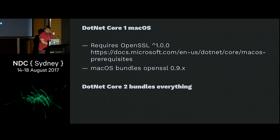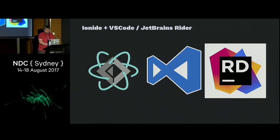It deals with talking to NuGet and gets everything set up. .NET Core 2 came out, so I had to alter my slides last week. If you're still on .NET Core 1 and running on Mac, you need to make sure you've got OpenSSL 1 or greater, because macOS ships with an officially deprecated version of OpenSSL. .NET Core 2 actually comes with everything bundled inside it.